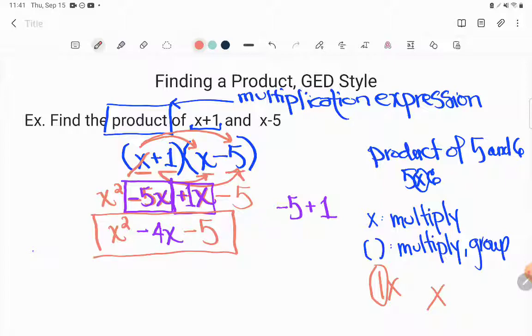And now this is the simplified product. This is as simple as this product, this multiplication problem, is going to get. We can't do any more math, and so we're done.